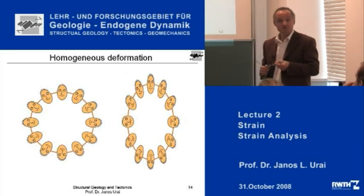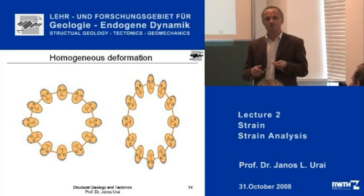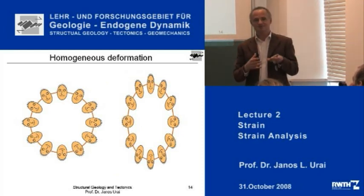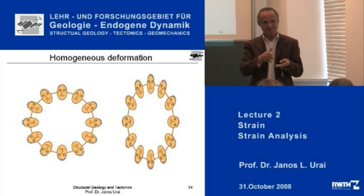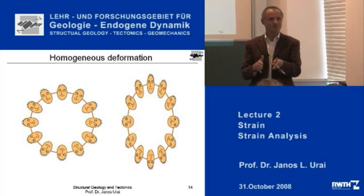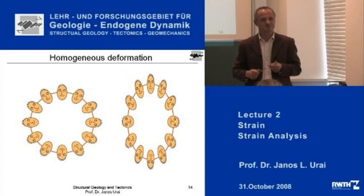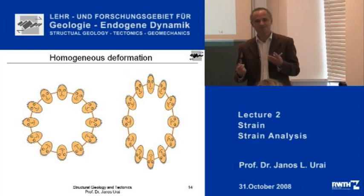Homogeneous deformation, as I've shown you, looks really quite simple. Lines become lines, parallel lines are parallel lines, circles become ellipses. But some of the figures you get can actually be rather surprising.